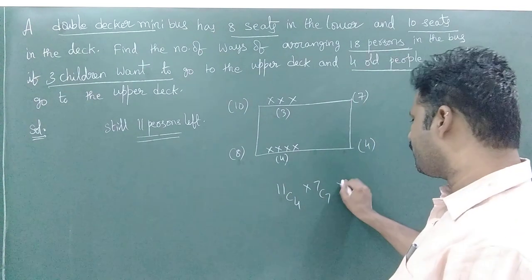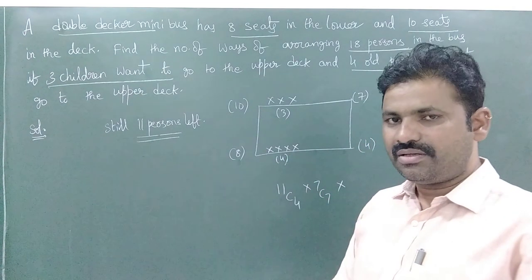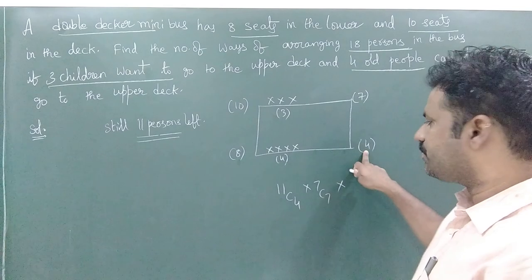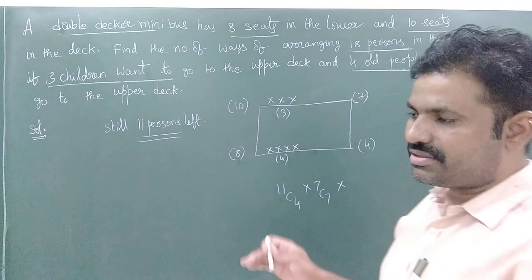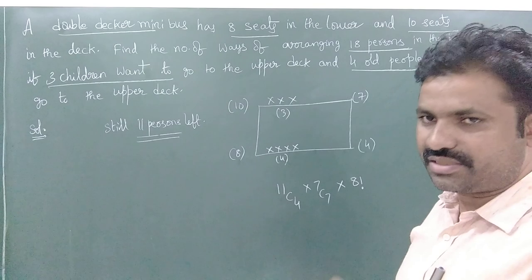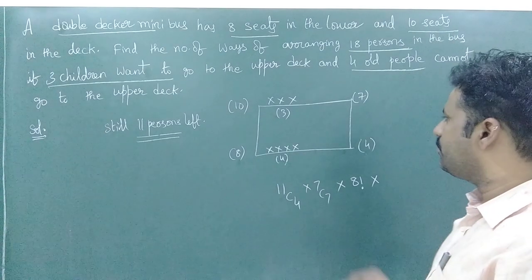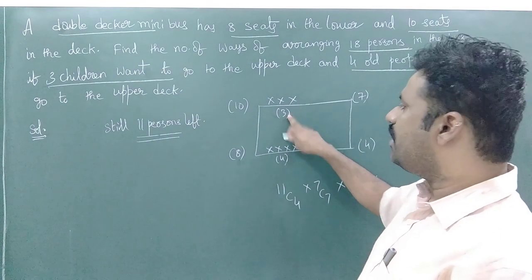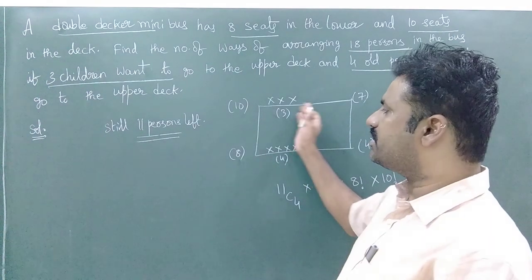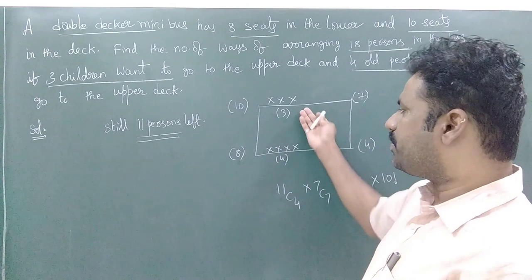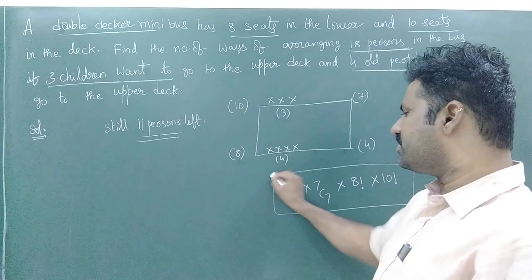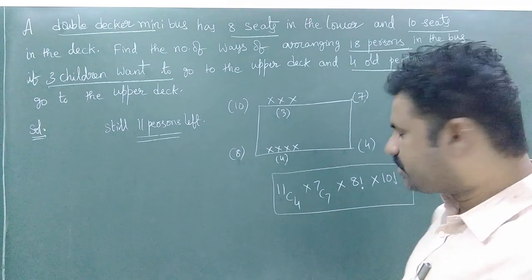Now for arrangement: the 4 old people want to sit in the lower deck, but they did not say they want to sit together. So this 4 and the selected 4 — total 8 persons in the lower deck, 8 places — can be arranged in 8! ways. Then 7 plus 3 = 10 persons in the upper deck, arranged in 10! ways. So the final answer is 11C4 × 7C7 × 8! × 10!.